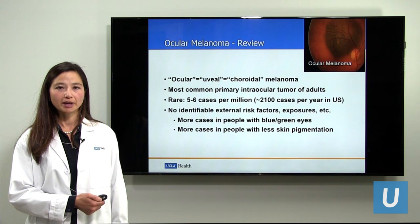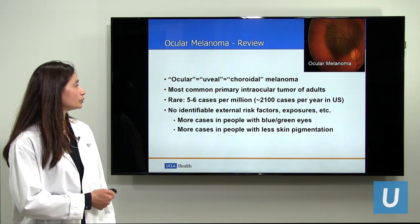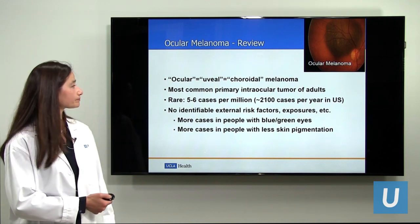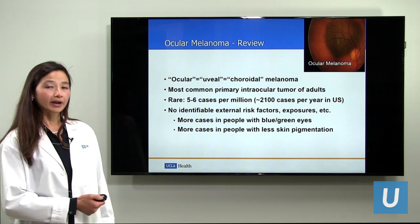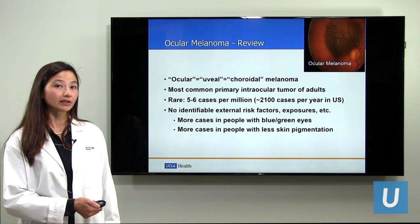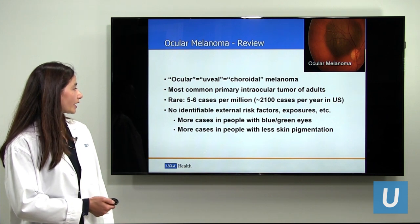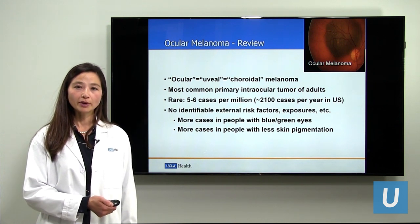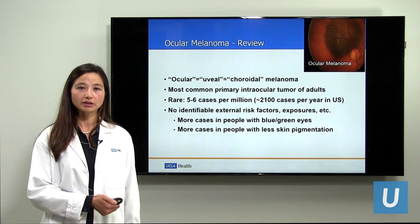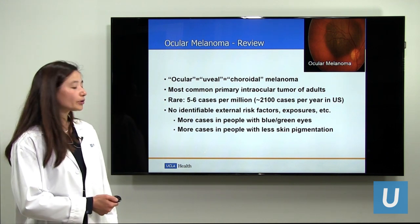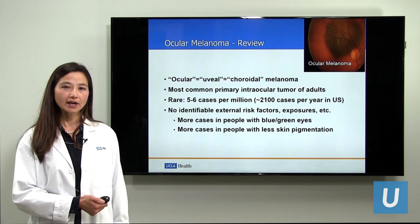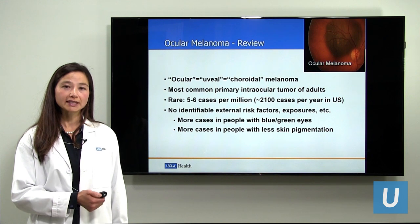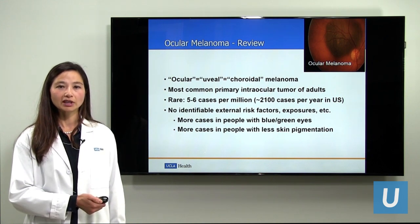Ocular melanoma, uveal melanoma, choroidal melanoma all refer to the same thing: eye cancer. Although it is rare, it is the most common primary tumor of adults. There are five to six cases per million per year, equating to about 2,100 patients newly diagnosed per year in the United States. Although there have been many studies to look at associated risk factors, no particular exposures have been identified that increase the risk of developing ocular melanoma.